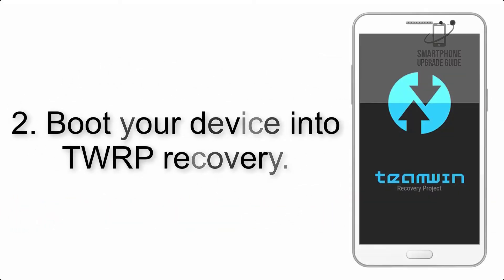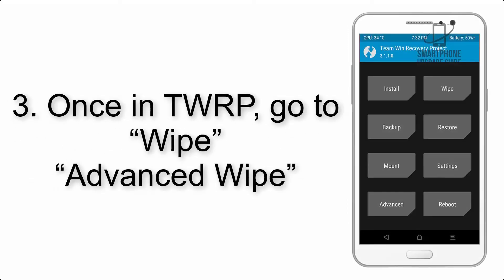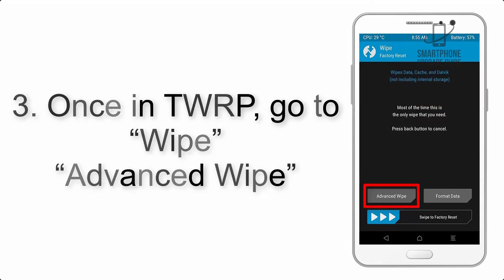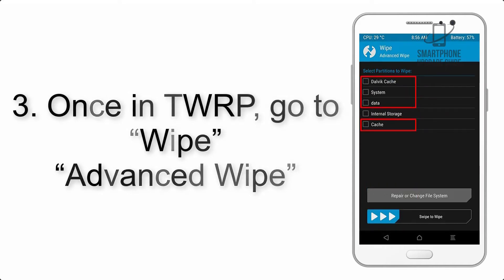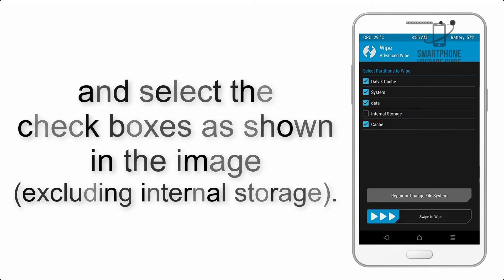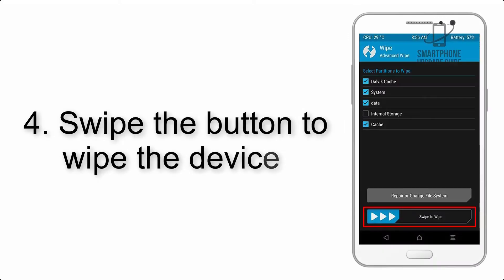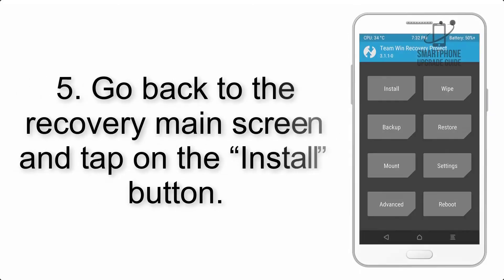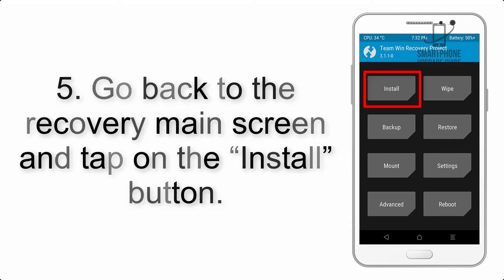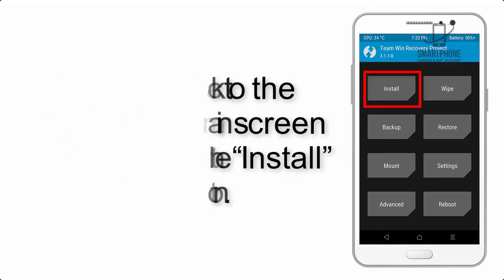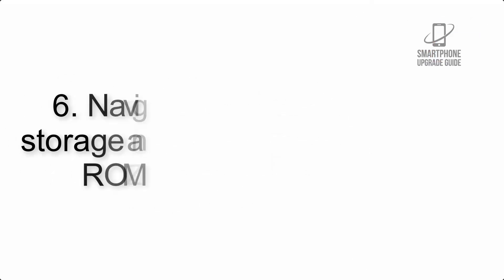Step 2: Boot your device into TWRP recovery. Once in TWRP, click on Wipe, then Advanced Wipe, and select the checkboxes as shown in the image, excluding internal storage. Step 4: Swipe the button to wipe the device. Step 5: Go back to the recovery main screen and tap on the Install button.